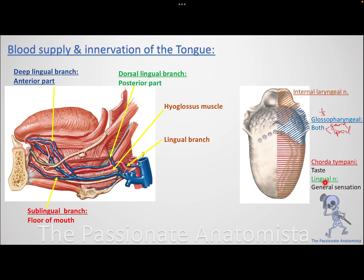For the anterior two-thirds, innervation is split. General sensation is provided by the lingual nerve. Taste (special sensation) is carried by the chorda tympani, a branch of the facial nerve whose nuclei in the brainstem are the salivary nuclei responsible for taste. So for the anterior two-thirds: lingual nerve for general sensation, chorda tympani for taste.